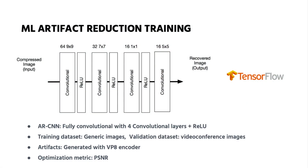The first thing that we needed was to find a machine learning model that could take the compressed image with the artifacts as input, do some processing, and get a recovered image that hopefully would have better quality than the original. We did some research and found some models. We decided to take one called ARCNN because it was popular, the results looked good, and the complexity was not that big, so maybe it was a good candidate to run on a mobile device.